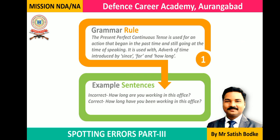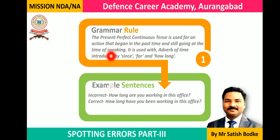This is rule number 1. Here we are going to talk about the sequence of tenses. When do we use perfect continuous tense? Perfect continuous tense is used to talk about an action which started in the past at a definite or indefinite point of time, and is still continuing at the time of speaking in the present. For example, we started learning English some years ago — 10 years ago, 15 years ago, 5 years ago. The action started in the past and is still continuing. This is known as a present perfect continuous action. For such actions, we use adverbs of time such as since, for, how long, etc.